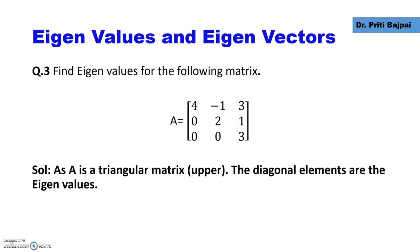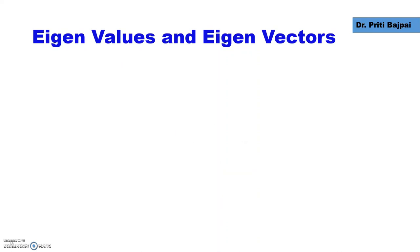We'll start with an example. Let's say we have to find the eigenvalues and eigenvectors for the given matrix A. The diagonal elements are 4, 2, and 3, and the values below the diagonal are all zero. Such a matrix is called an upper triangular matrix. In such a case, the diagonal elements themselves are the eigenvalues: lambda 1 is 4, lambda 2 is 2, and lambda 3 is 3.